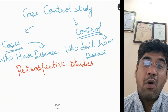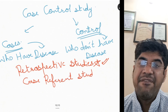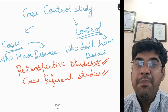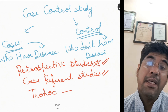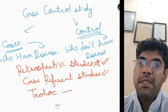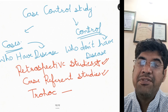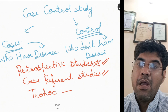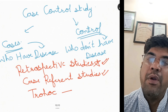Another name for case-control studies is 'trohoc' — cohort spelled backward — referring to the fact that case-control studies are designed to estimate the association between exposure and outcome by comparing the frequency of exposure between cases and controls, similar to the way cohort studies compare the incidence of outcome between exposed and unexposed groups over time. However, case-control studies are distinct from cohort studies in that they are not prospective and do not follow individuals over time.